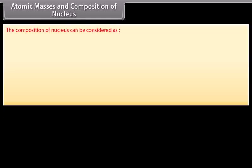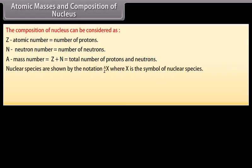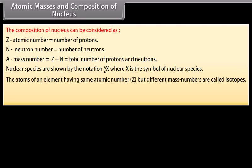The composition of nucleus: let Z be the atomic number, equal to the number of protons; let N be the neutron number, equal to the number of neutrons; let A be the mass number, equal to Z plus N, the total number of protons and neutrons. Nuclear species are shown by notation where X is the symbol of the nuclear species. Atoms of an element having the same atomic number Z but different mass numbers are called isotopes.